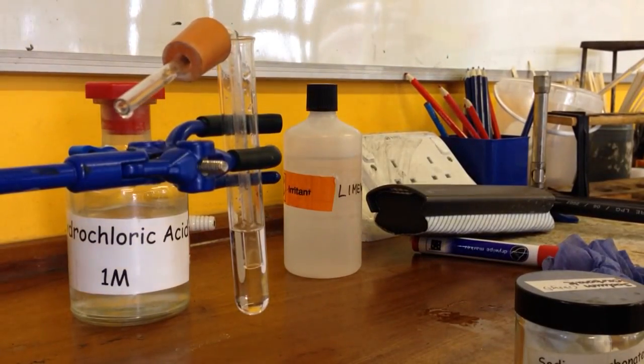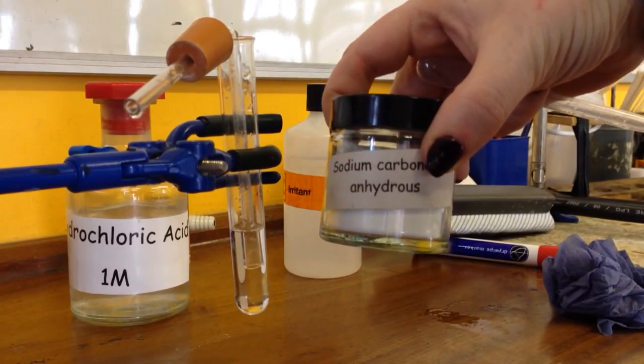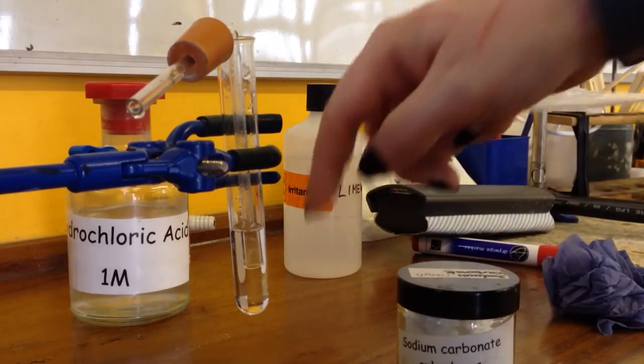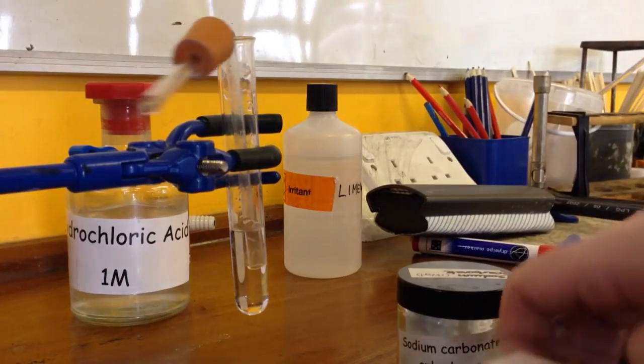So here we're going to be looking at the test for carbonate ions. I'm going to be testing sodium carbonate, so that's carbonate ions in. Here I have a beaker which has lime water in and a delivery tube into the beaker.